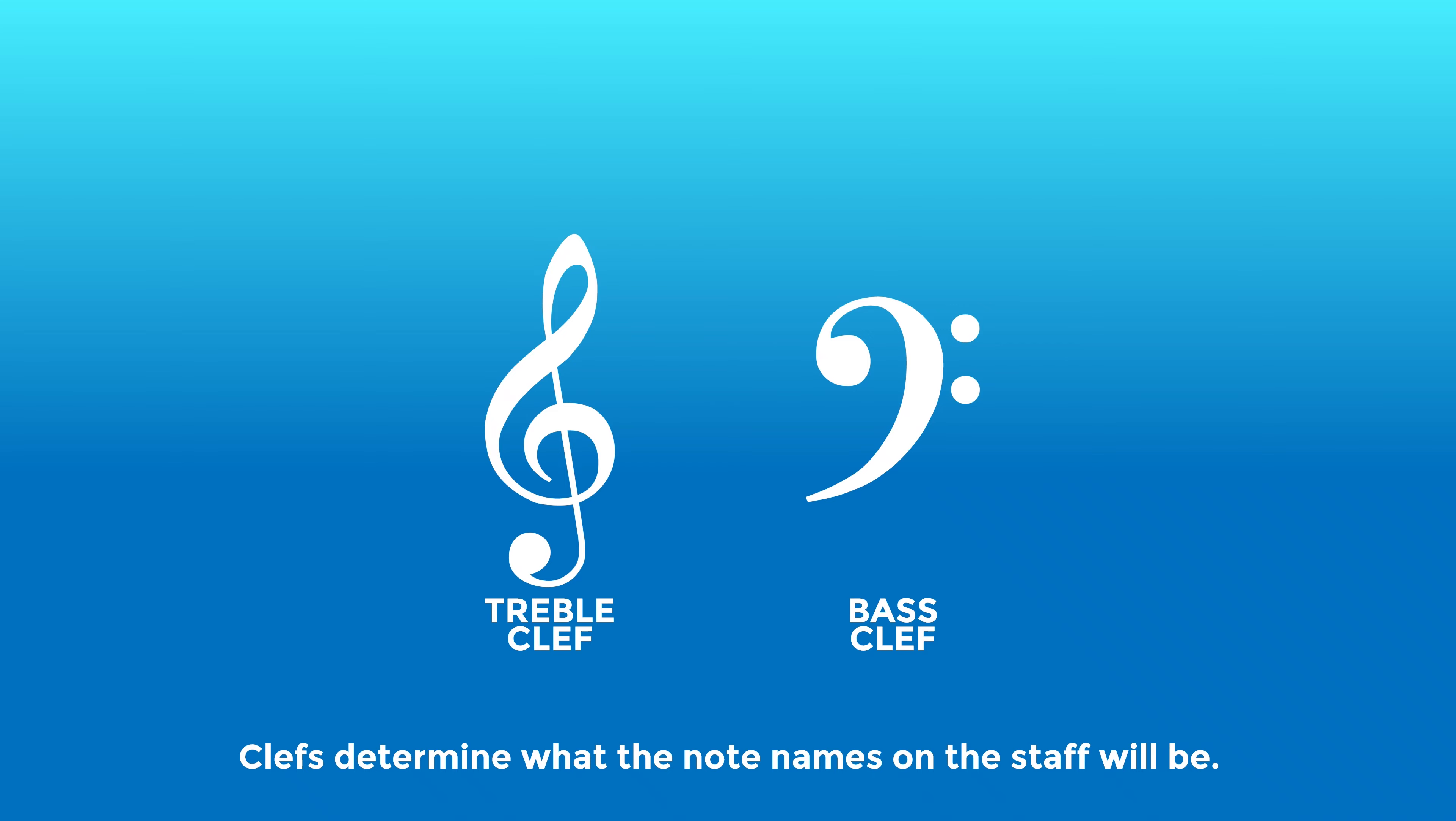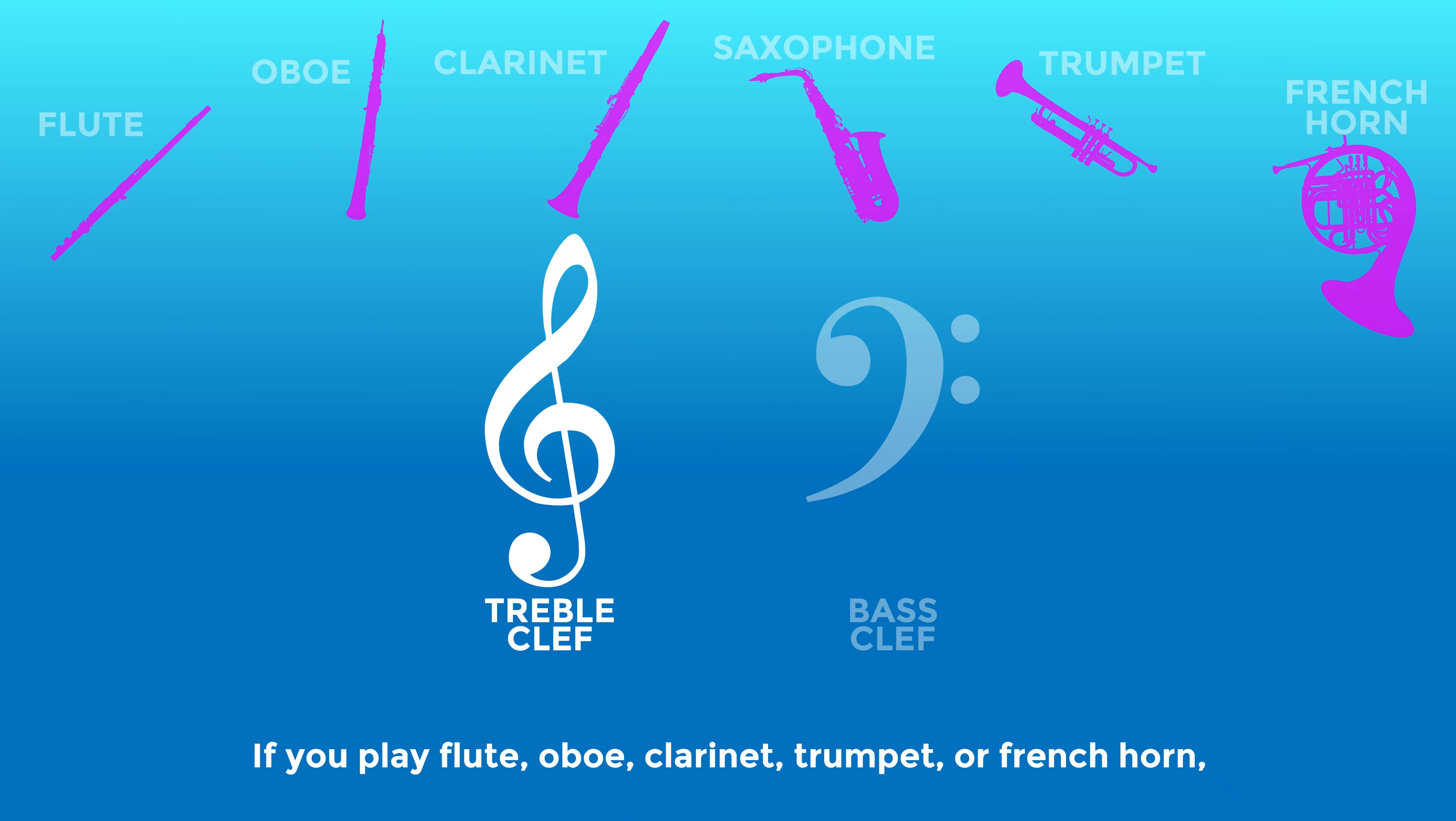Clefs determine what the note names on the staff will be. If you play flute, oboe, clarinet, trumpet or French horn, you'll read music in treble clef.